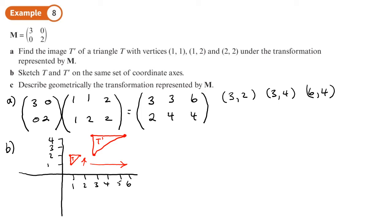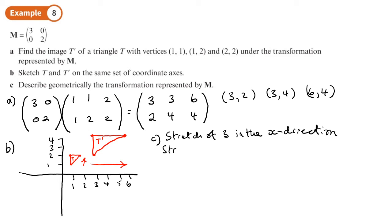Part C says: describe geometrically the transformation represented by M. Looking at the triangle's length in the x direction — a length of 1 has become 3 — so that's a stretch of 3 in the x direction. In the y direction, a length of 1 has become 2, so that's a stretch of 2. So we write: stretch of 3 in the x direction and a stretch of 2 in the y direction, or parallel to each respective axis.